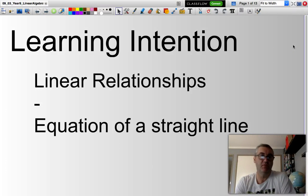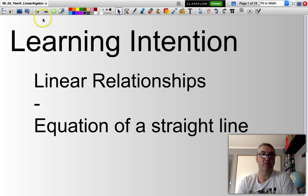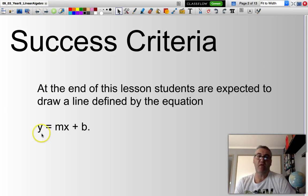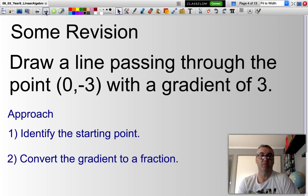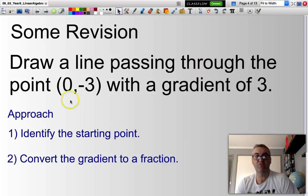Hello and welcome. In this presentation we will be looking at defining the equation of a straight line in the format y equals mx plus b. So just a little bit of revision from last time. Say I wish to draw a straight line passing through the point (0, -3) with a gradient of 3. This is what we'll be doing effectively with the y equals mx plus b approach.